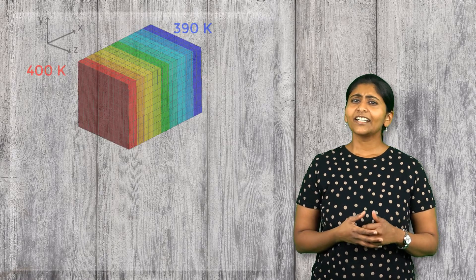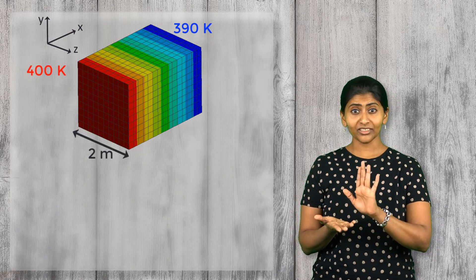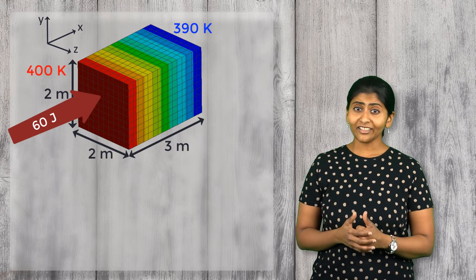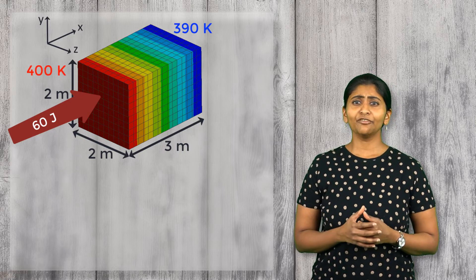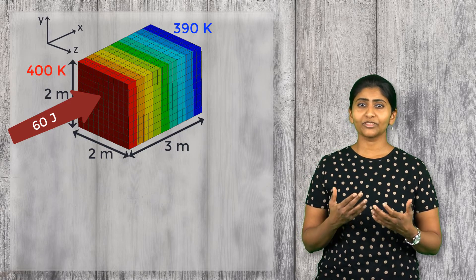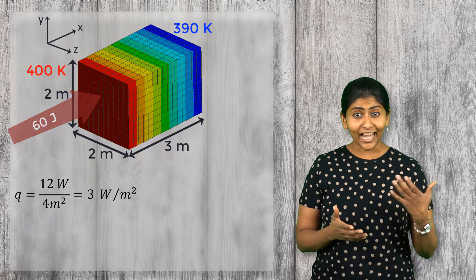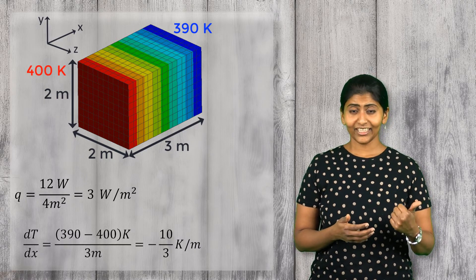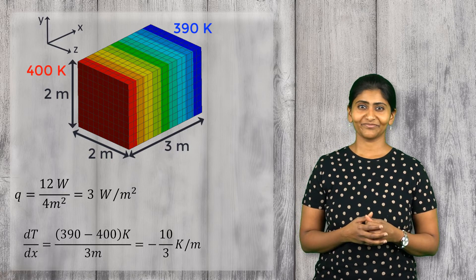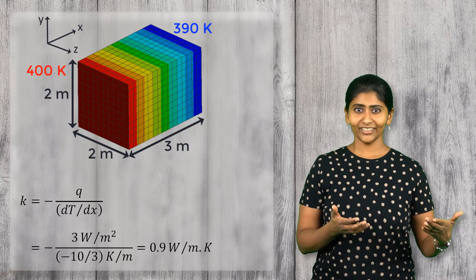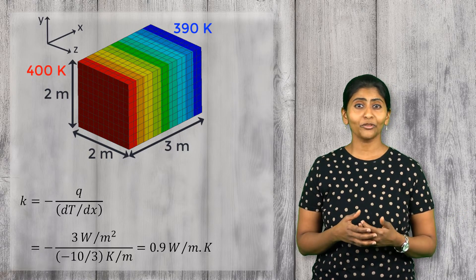To understand this unit better, let's look at a simple example. Consider a cube which is 2 meters by 2 meters by 3 meters in dimensions. Let's say that 60 joules of heat flows in 5 seconds in the x direction. So, the heat flow rate is 12 watts. Since the area normal to the x direction is 2 times 2, that is 4 meters square, the heat flux in that direction is 3 watts per meter square. The temperature gradient in x direction is minus 10 by 3 Kelvin per meter. The thermal conductivity of a material is equal to the heat flux divided by the temperature gradient, which in this case is 0.9 Watt per meter Kelvin.